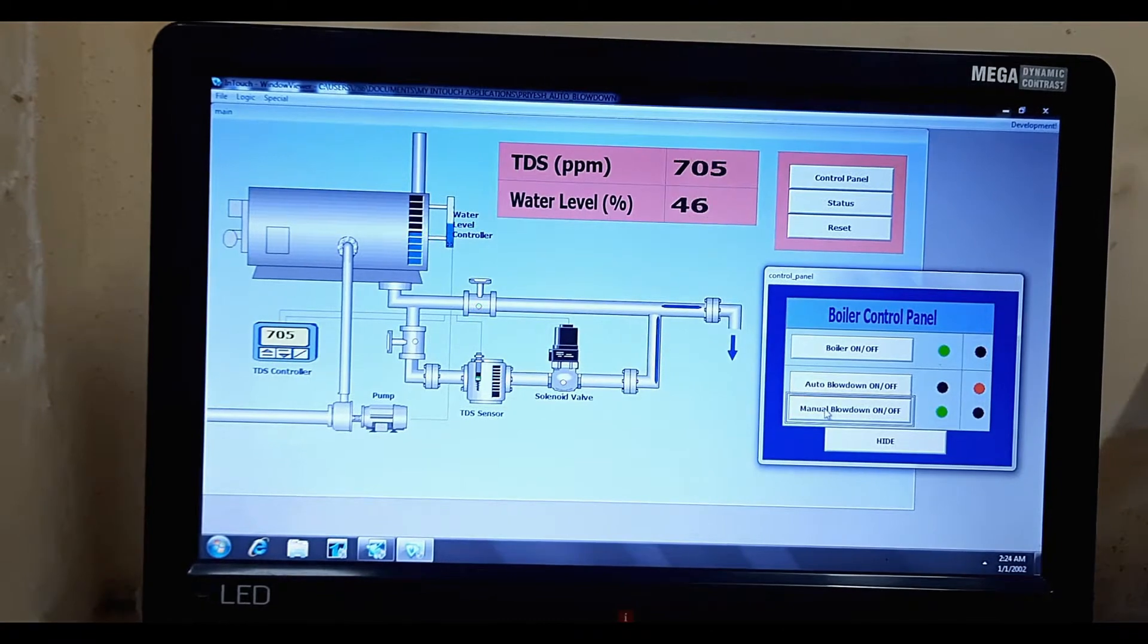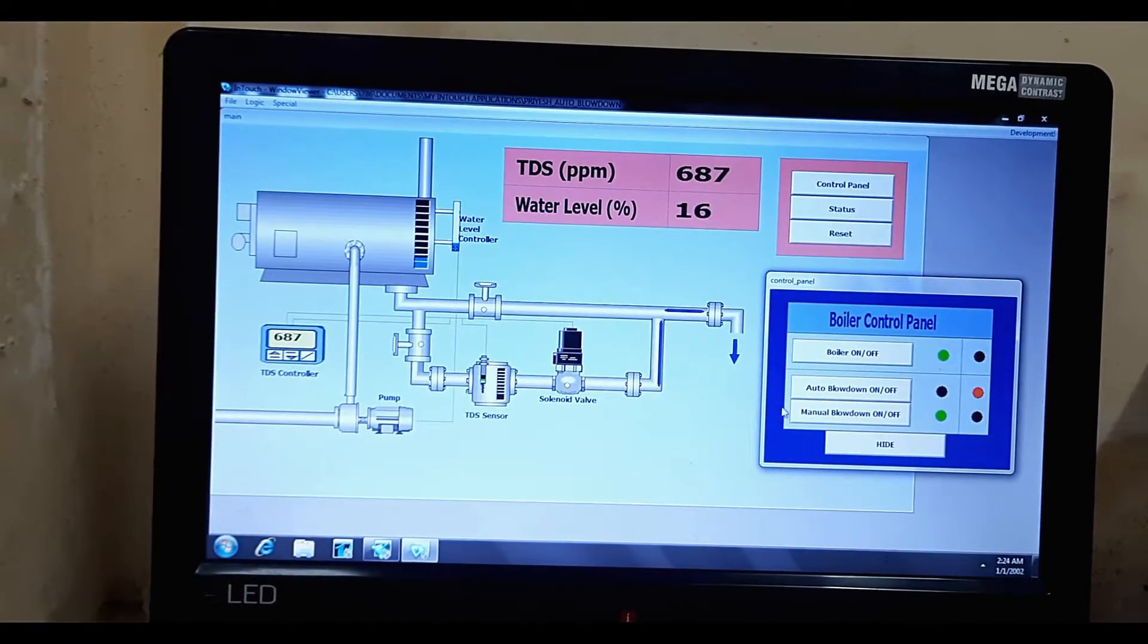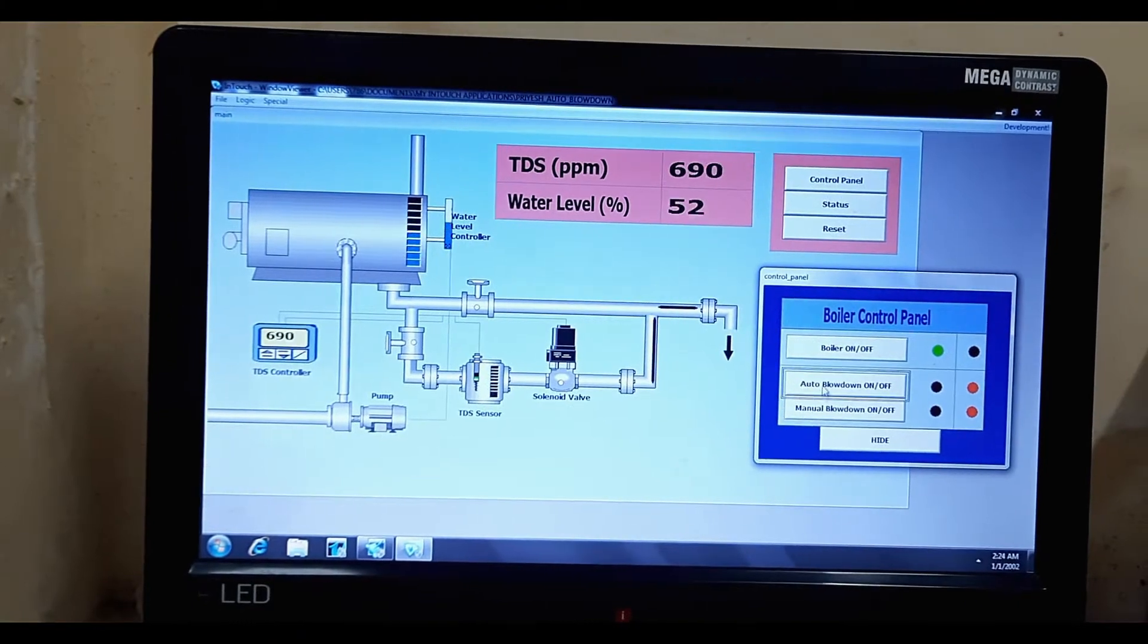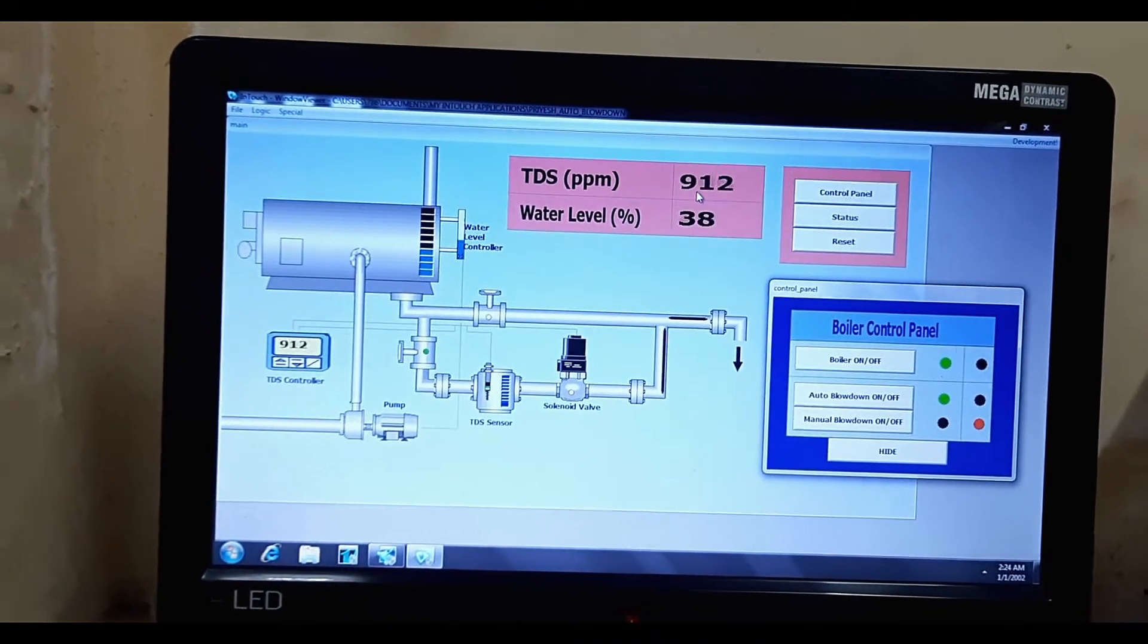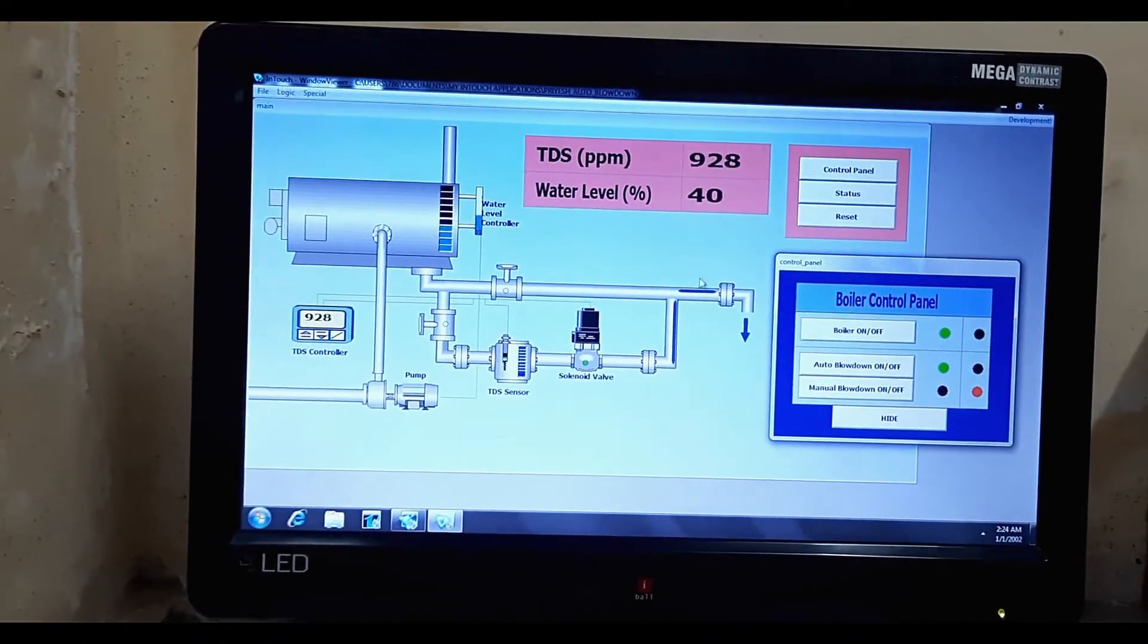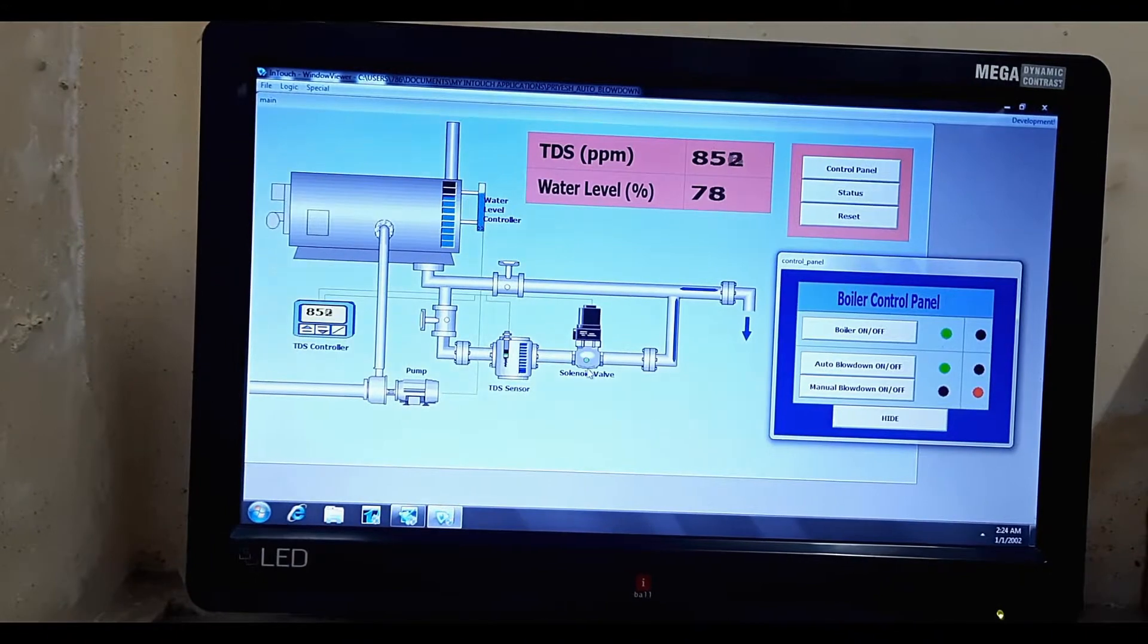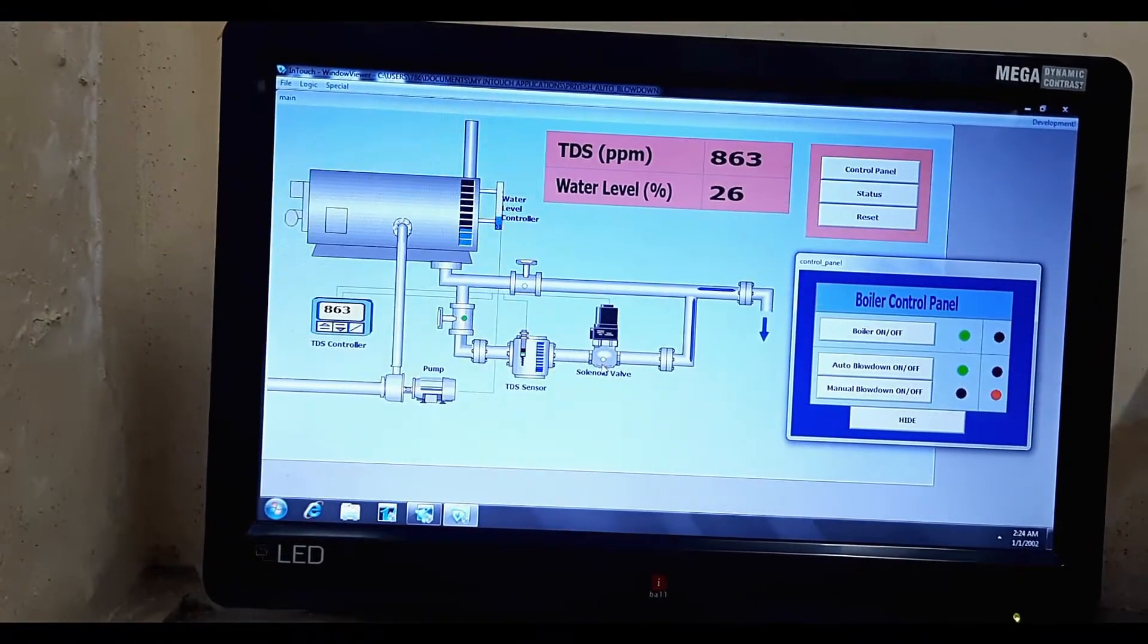So let's turn off this manual blowdown and let's turn on this automatic system. Now I have programmed that when this TDS reaches thousand, the automatic blowdown will start. So you can see that these valves are opened.